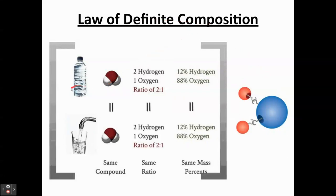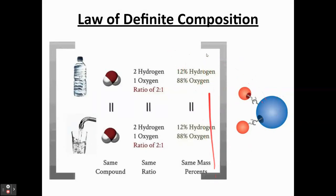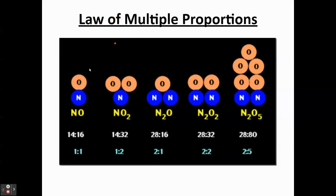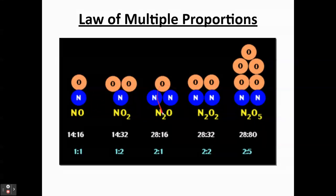For the law of multiple proportions, you can see several compounds made of the same elements but connected in different proportions: one N to one O, one N to two O's, two N to one O, two N to two O's. Dalton can explain that nitrogen monoxide always exists in a one-to-1.143 ratio, and nitrogen dioxide will always exist in a one-to-2.286 ratio, because these spheres have their own individual mass and connect in those proportions by mass.